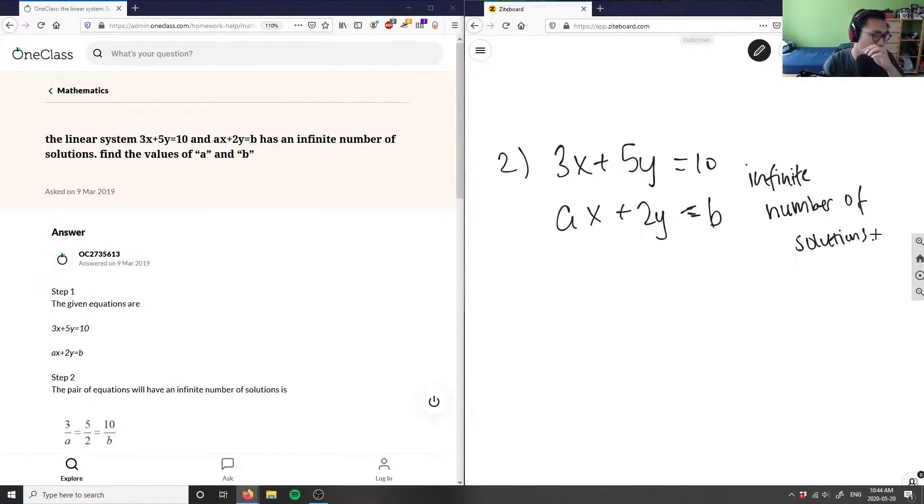In order to solve this problem, we have to ask what does it mean when we have an infinite amount of solutions? Well, in a system of linear equations, geometrically we have two lines. I have one line here and another line that could cross at a point.